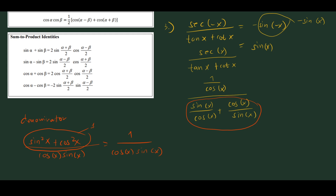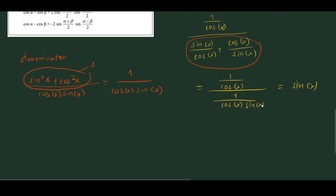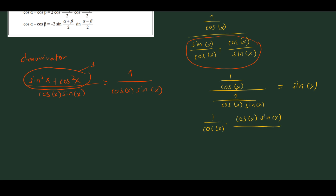Plugging back in, we have (1/cos x) divided by (1/(cos x · sin x)). Dividing by a fraction means multiplying by its reciprocal, so we get (1/cos x) · (cos x · sin x)/1. The cos x cancels, and we are left with sin x. We've proven that the two expressions are indeed equivalent.